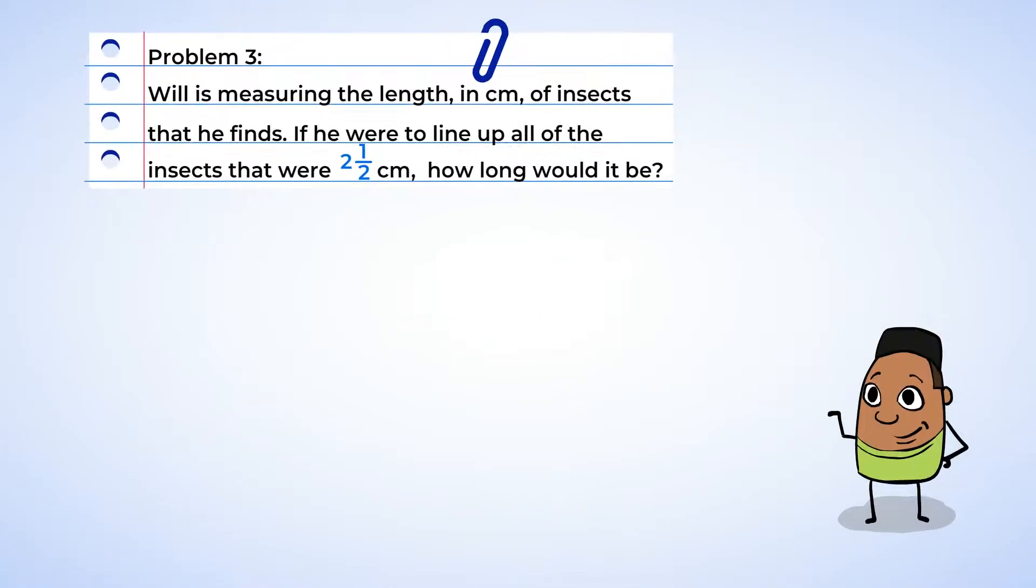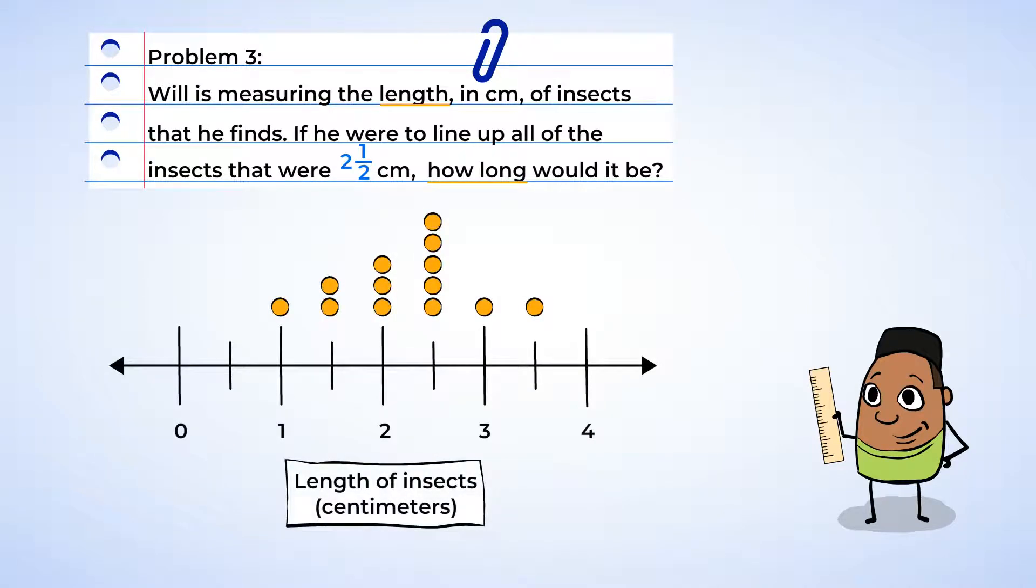Here it comes. Will is measuring the length in centimeters of insects that he finds. If he were to line up all of the insects that were two and a half centimeters, how long would it be? First, we want to find out how many insects had a measure of two and a half centimeters.